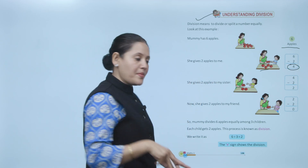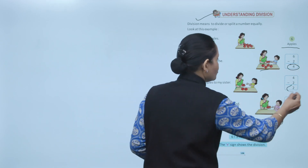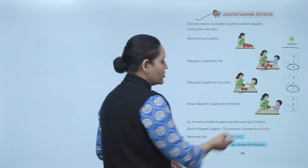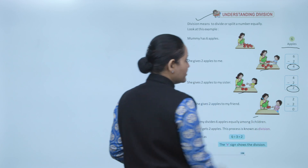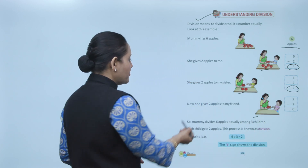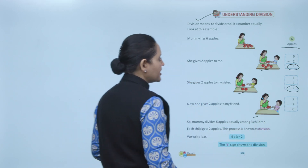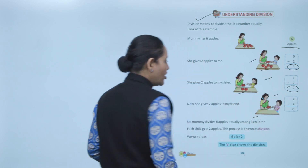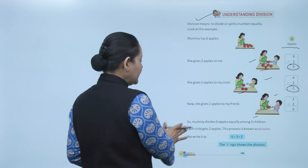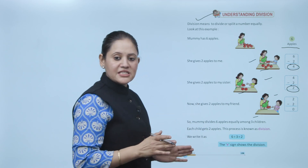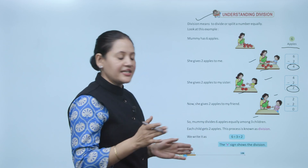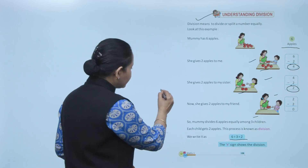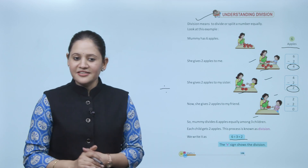Now she gives two apples to my sister, so four minus two equals two — two apples left. Then she gives two apples to my friend, so two minus two equals zero — no apple left. So mummy divided six apples equally among three children, and each child got two apples. This process is known as division. We write it as six divided by three equals two, and this is the sign of division.